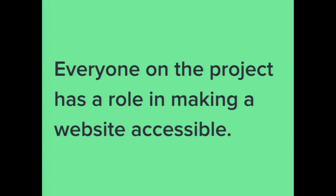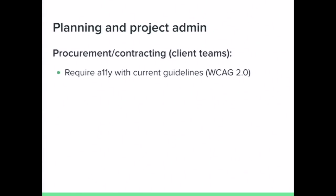So what do we do with accessibility throughout the project? Everyone on the project has a role. You can spread the load with accessibility task work, and it becomes less expensive to fix issues rather than leaving them to the very end. When you're planning a project, if you're a client, write it into your contract. Make it a requirement for your vendors. Make sure you spec out the guidelines, and if you can afford to test with real people with disabilities, that's the best thing you can do — because you can meet technical guidelines but still not be functionally accessible.